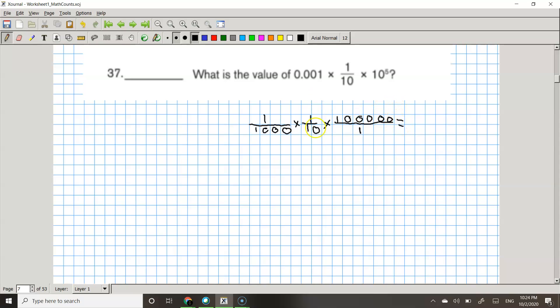So 1 times 1 is 1, times 100,000 is 100,000. And then 1,000 times 10 is 10,000 times 1 is 10,000.